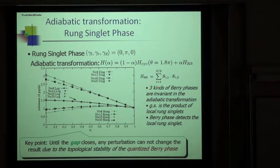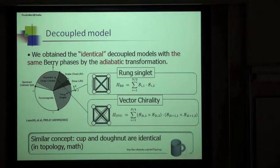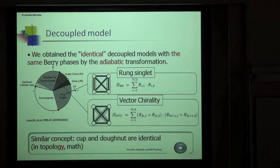The three kinds of Berry phases are invariant in the adiabatic transformation. In summary, we obtain the identical decoupled model with the same Berry phases by the adiabatic transformation. It means that the decoupled model and the original Hamiltonian has the same Berry phases. Similar concept is here, the cup and the doughnuts are identical in the mathematical topology theory.